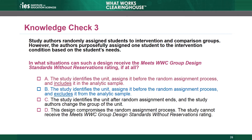B is the correct answer. Purposefully assigning a student to one condition outside of random assignment does not compromise the random assignment as long as the study identifies the student before random assignment and does not include the student in the analytic sample. Choice A is incorrect because including a unit not randomly assigned in the analytic sample compromises the integrity of the random assignment process. Choice C is incorrect because changing the condition of units after random assignment compromises random assignment. Choice D is also incorrect because these units do not compromise random assignment when the study identifies them before random assignment and does not include them in the analytic sample.